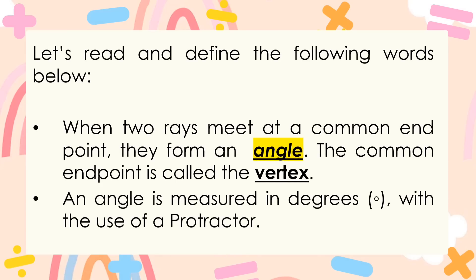Before that, let's read and define the following words — kindly take note of these terms. When two rays meet at a common endpoint, they form an angle. The common endpoint is called the vertex — the point where they meet. An angle is measured in degrees with the use of a protractor.